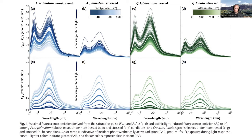Spectrally resolved measurements from our coupled PAM-SIF system show that FM values decrease almost equally across all wavelength ranges under increasing ambient PAR — making it hard to gain spectral shape information. However, the absolute fluorescence signal FT, what we see from space, increases with ambient light. Under stressed conditions, the SIF signal decreases compared to initial levels, carrying some information about stress level.